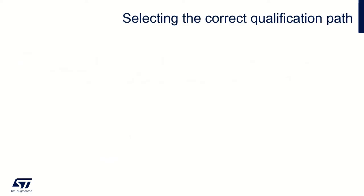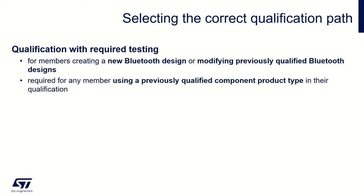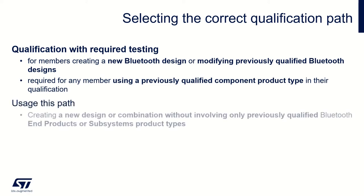There are two paths available in Launch Studio for product qualification: qualification with required testing and qualification with no required testing. The path selected depends on the parts of the Bluetooth design a member will use — for example, whether designs are already qualified or not, or the product types already qualified. Qualification with required testing is intended for members creating a new Bluetooth design or modifying a previously qualified Bluetooth design, and is also required for any member using a previously qualified component product type in their qualification.